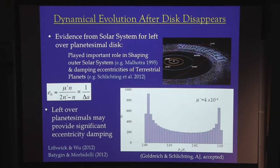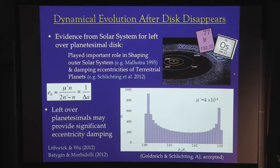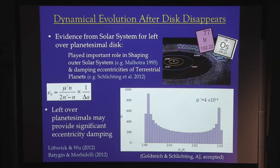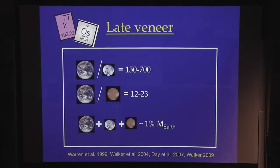We have evidence from our own solar system for such a leftover planetesimal population — the Kuiper Belt and asteroid belt are filled with planetesimals leftover from planet formation. And for the terrestrial planets, we also have something called the late veneer. We have geochemical measurements that show there were planetesimals leftover in the terrestrial planet region, created late, after the giant impacts. This evidence comes from highly siderophile elements — called siderophile because they are iron-loving and would love to hang out with iron.